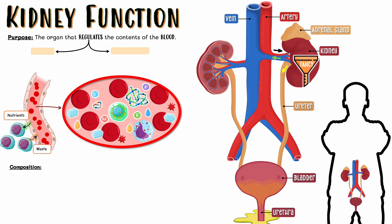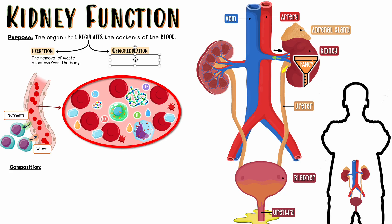So to summarize: the kidney is the organ that regulates the contents of the blood. It does two main things. First, excretion — the kidney ensures we get rid of things our body doesn't need anymore by taking them out of the blood. Second, osmoregulation — the regulation of water levels in our body. We'll talk about that in detail later in this video.